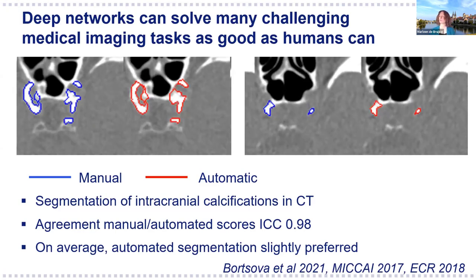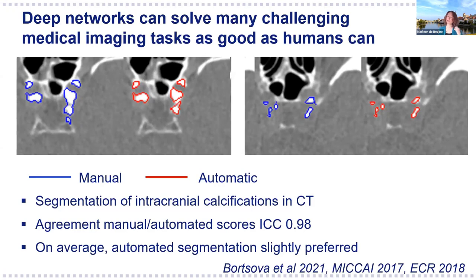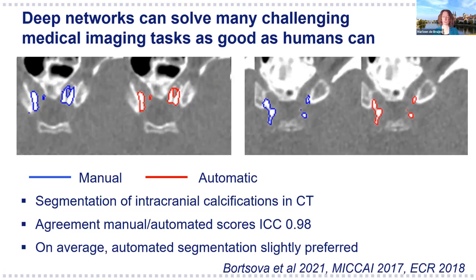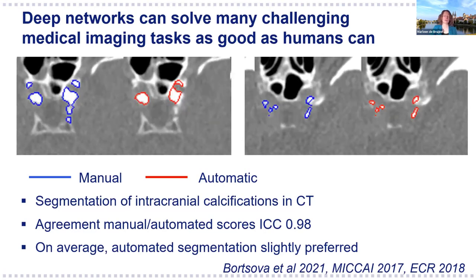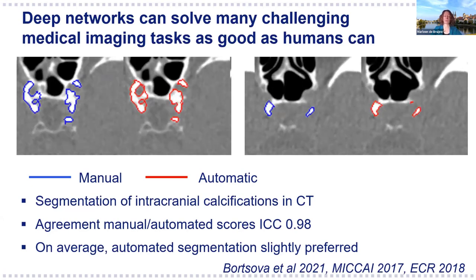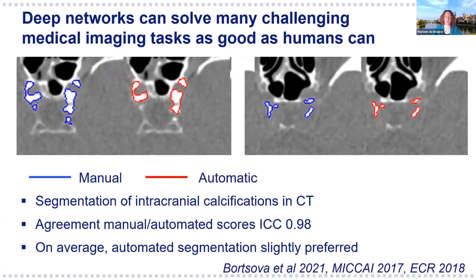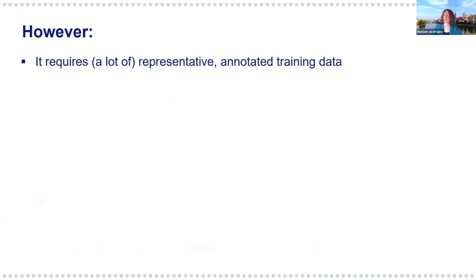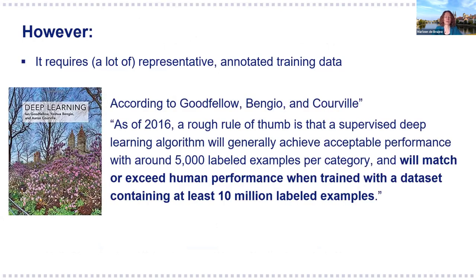On average, we did a visual comparison where an expert had to say which annotations they preferred—the manual or the automated ones—and they had a slight preference for the automated ones. We have seen in the past few years many examples in which deep learning performs as good as or even better than human observers. However, it requires a lot of representative and annotated data. As a rough rule of thumb from Goodfellow and co-authors' famous deep learning book, you need 5,000 labeled examples at least to get reasonable performance and 10 million to surpass human performance. I don't fully agree with that within medical imaging; we've seen very good results with much fewer labeled images.